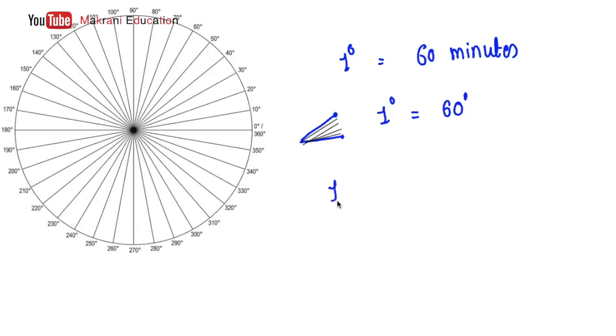And for seconds, one minute is again equals to 60 seconds. So one degree can be given as 60 times 60, which equals 3,600 seconds.